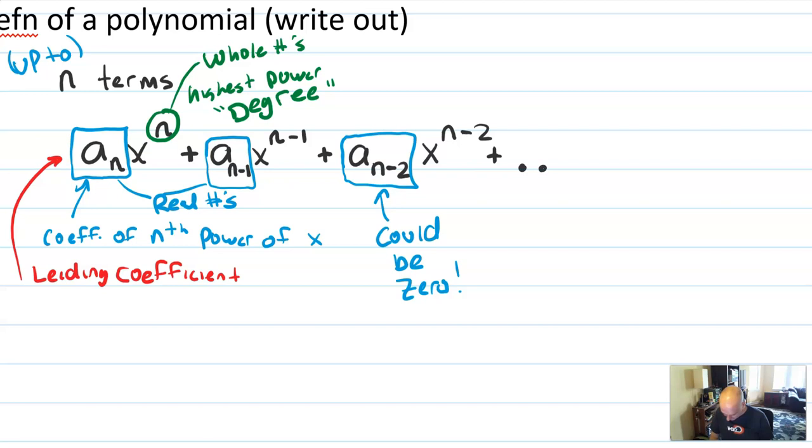So here's the math trick we use. I say plus. And I put a little ellipses, dot, dot, dot. And then I pick up at the end of the pattern. I know there's an end of the pattern because I have to have a finite number of terms.